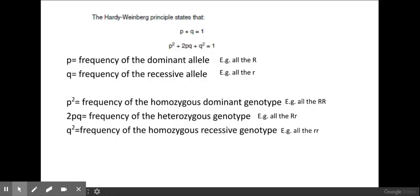The Hardy-Weinberg principle is these two formulas here, and you need to know what all the p's and all the q's mean. The small p here at the top is the frequency of the dominant allele, for example all of the big R's. The q here is the frequency of all the recessive alleles, for example all the small r's.